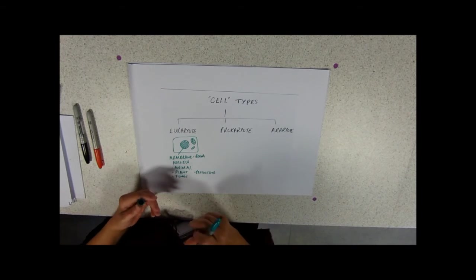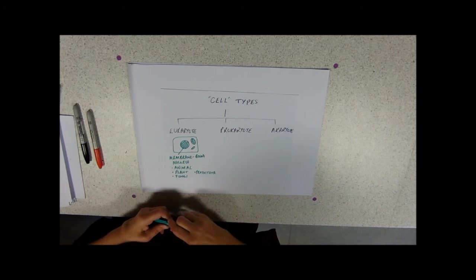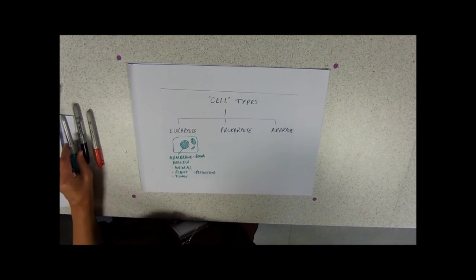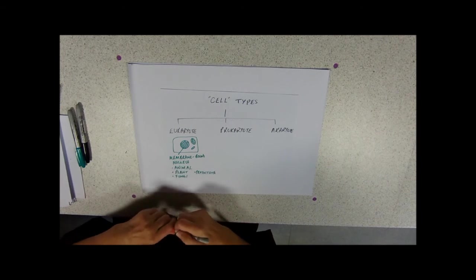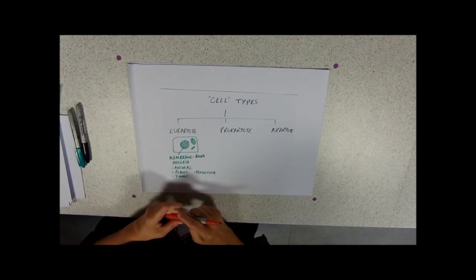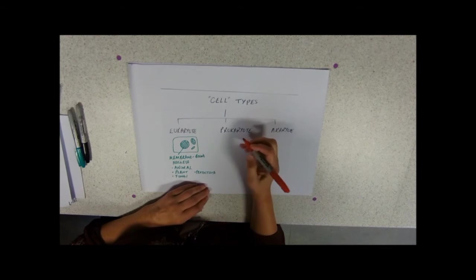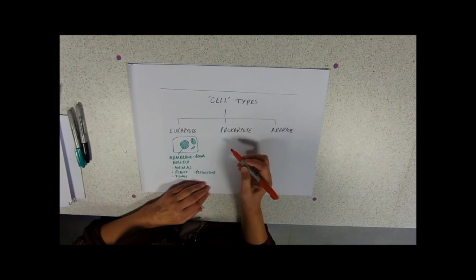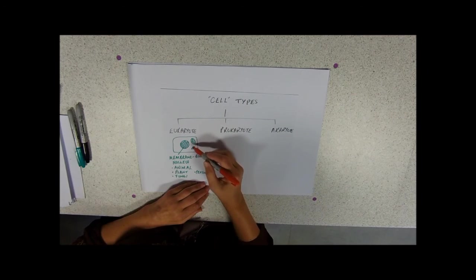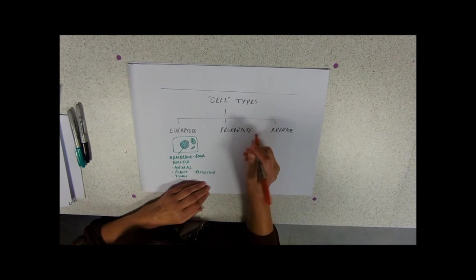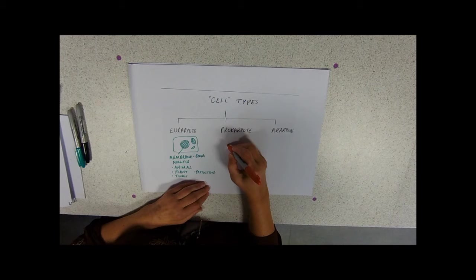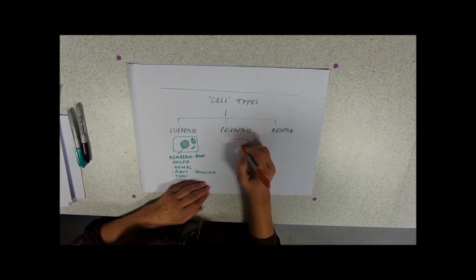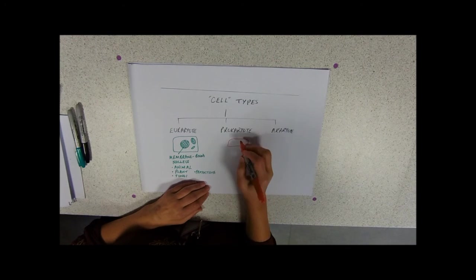So in contrast to the eukaryotes, these things with true chromosomes and a membrane bound, held in a membrane bound nucleus, there's the next sort of cell to be discovered, again with more advanced microscopy techniques and needed because they're only about the same size as these little membrane bound compartments or organelles, are the prokaryotes. So these are smaller and they do not have a membrane bound nucleus.